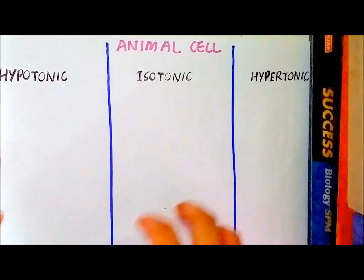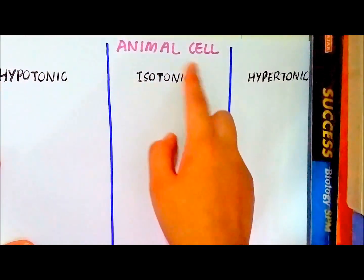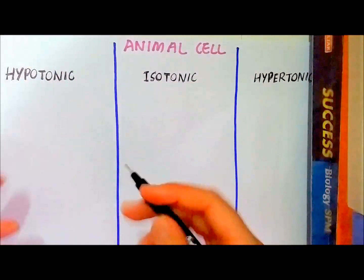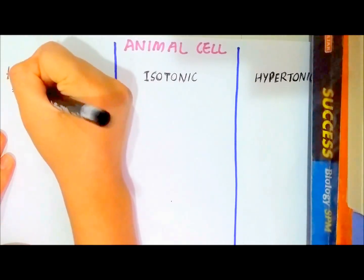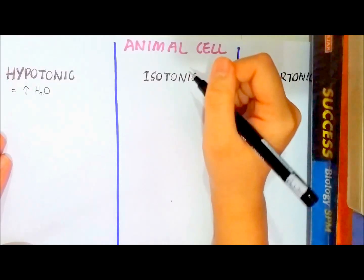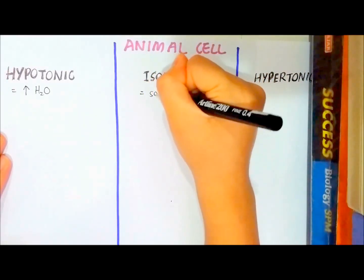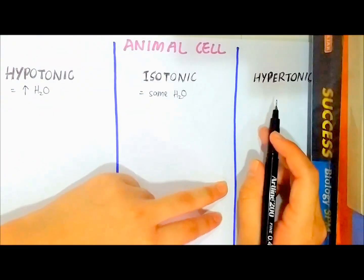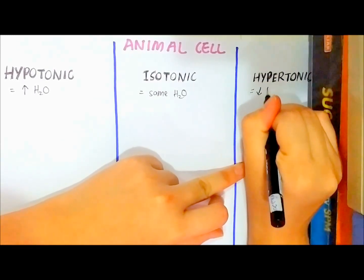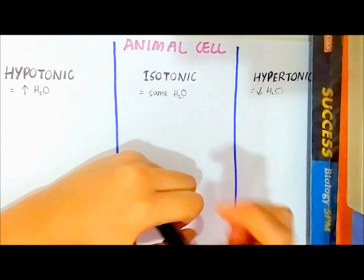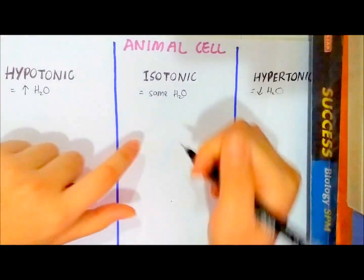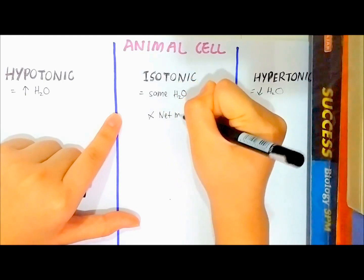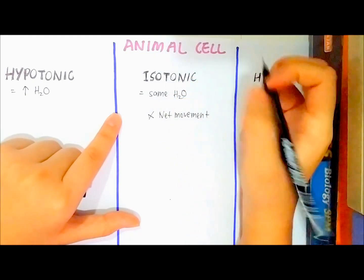Now let's talk about what will happen if animal cells are immersed in hypotonic, isotonic, and hypertonic solutions. Hypotonic solution has a higher concentration of water molecules. Isotonic solution has the same concentration of water molecules as the cytoplasm in the animal cell. Hypertonic solution has a lower concentration of water molecules. If the red blood cell is immersed in isotonic solution, there is no net movement of water molecules since they have the same concentration.